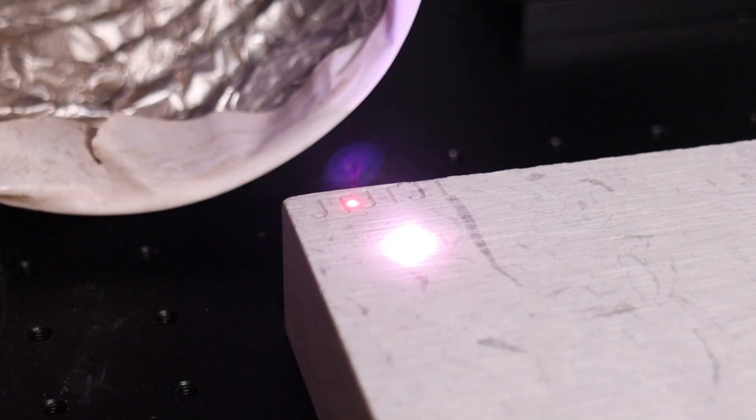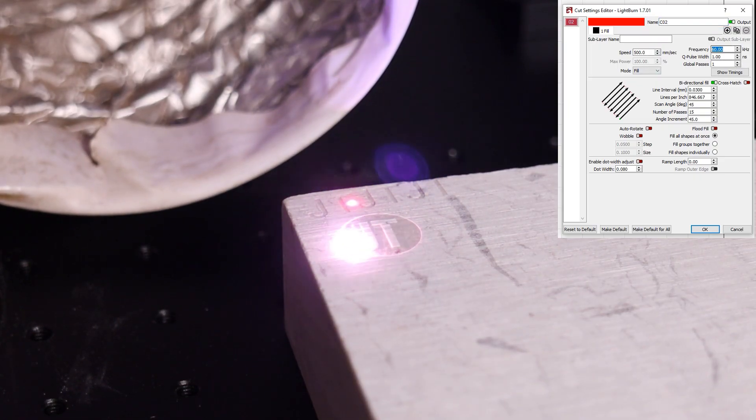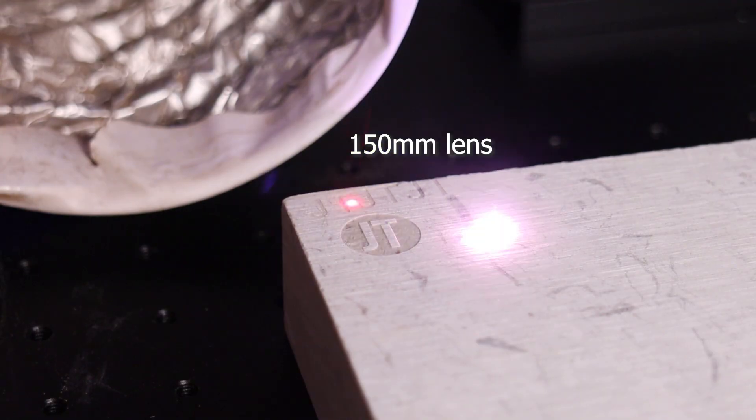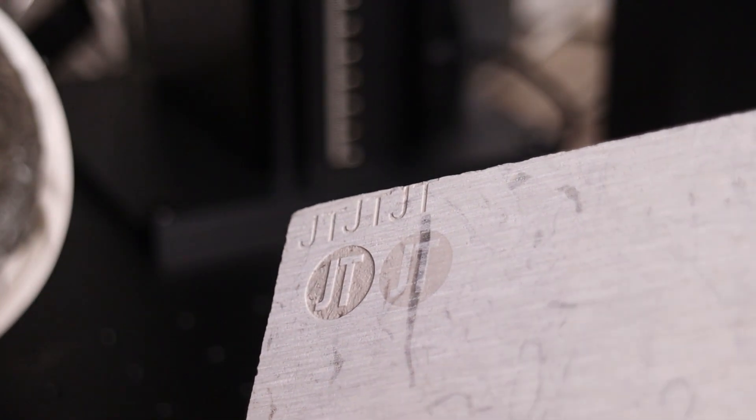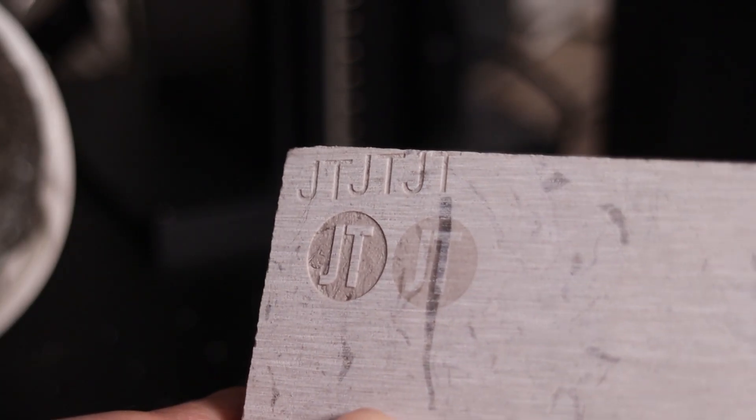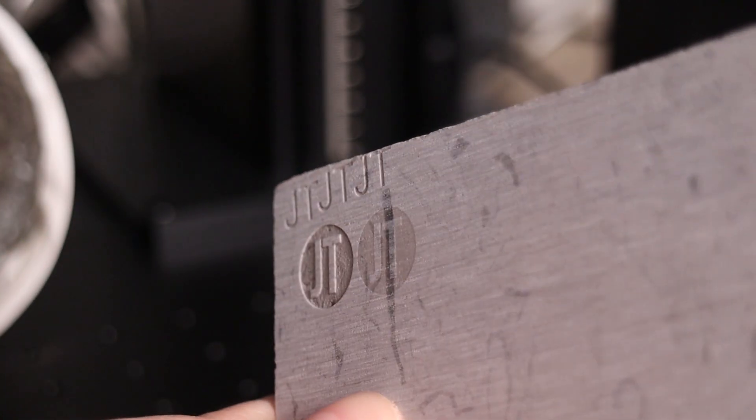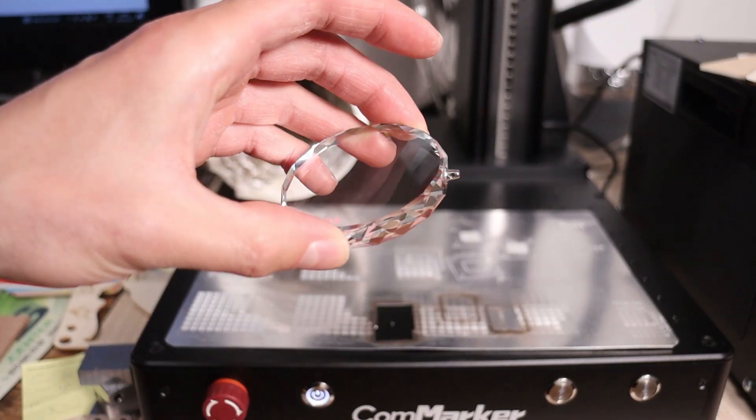Next, I leveraged the Omni's full 10 watts of power to perform a deep engraving on stone. I ran the machine for just 15 passes at 60 kilohertz with a 1 nanosecond pulse at the speed of 500 millimeters per second. The engraving was completed quickly, and for comparison, I ran the same design with just one pass beside it. The CommMarker Omni delivered a deep and crisp result. Honestly, it couldn't be better. I'm extremely satisfied with it.